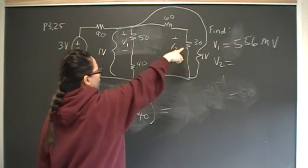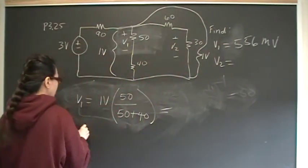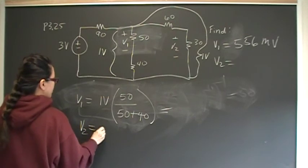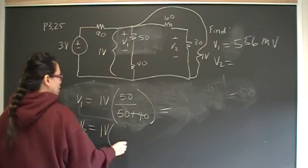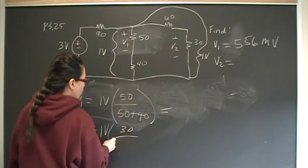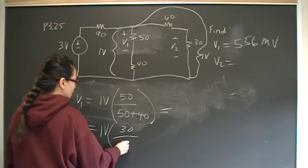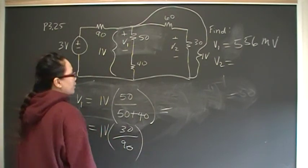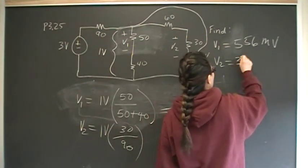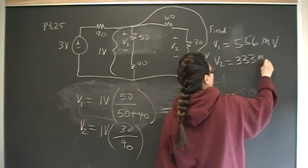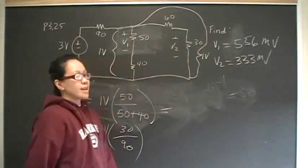V2 we want is across the 30. V2 is going to be 1 volt times 30 over 60 plus 30, which is 90. That's going to give me 1 third. And that will be 333 millivolts. And that's the answer to that problem.